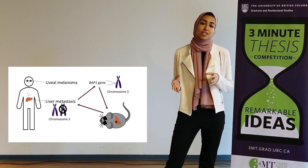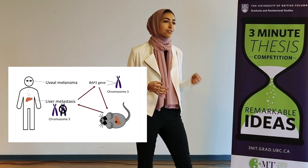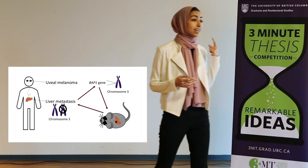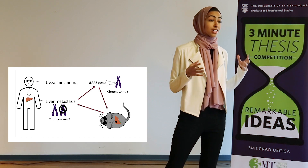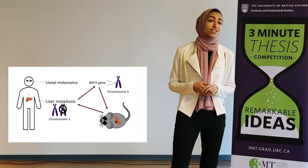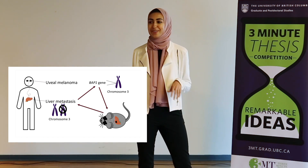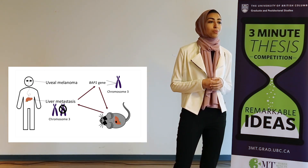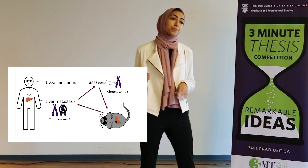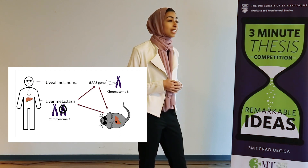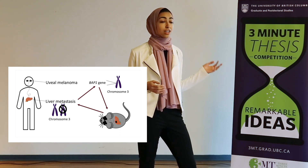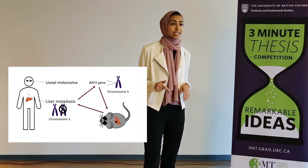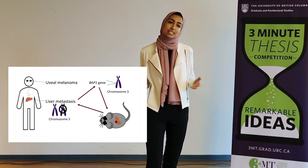There are many different types of melanomas depending on where these cells are found in our body. For example, when melanocytes in our eyes start to divide uncontrollably, this leads to a cancer known as uveal melanoma. Out of all the cancers that arise in our eyes, uveal melanoma is the most common type. The incidence rate of this cancer in Canada has been steadily increasing annually, and the highest incidence rate is right here in BC, with approximately 30 cases per year.